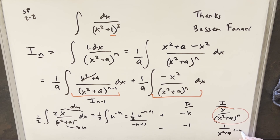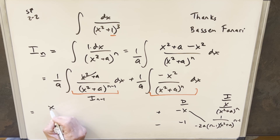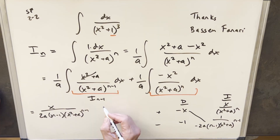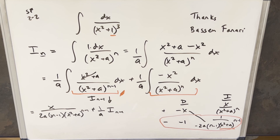Integrating u to the minus n gives one half times u to the minus n plus one over minus n plus one. Our u is x squared plus a, so the power becomes one minus n. From the diagonal of the DI table, we get a minus times minus which is a plus, bringing x into the numerator: x over 2a(n minus one), times x squared plus a to the n minus one. Then bringing down the next row, we have one over a times I sub n minus one.